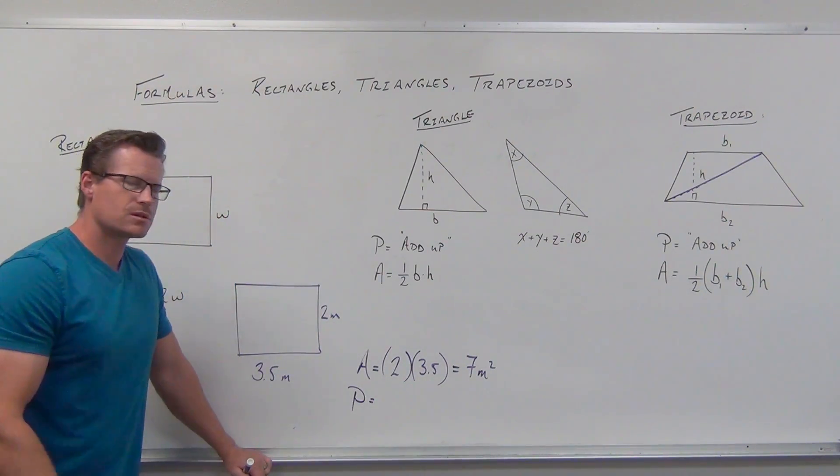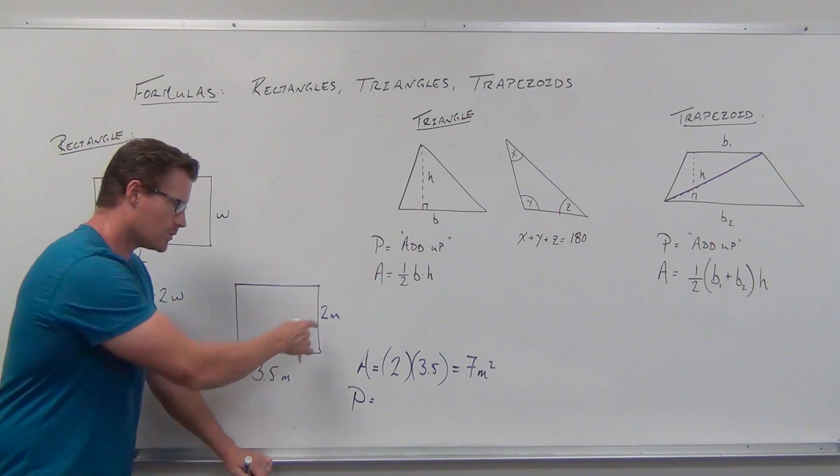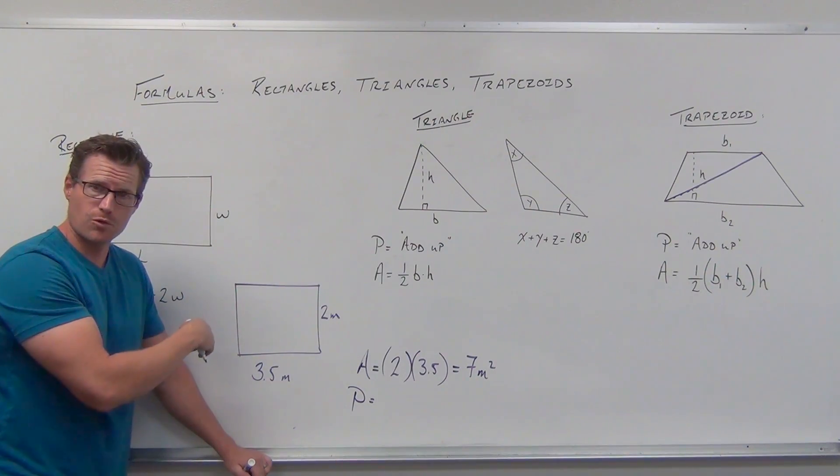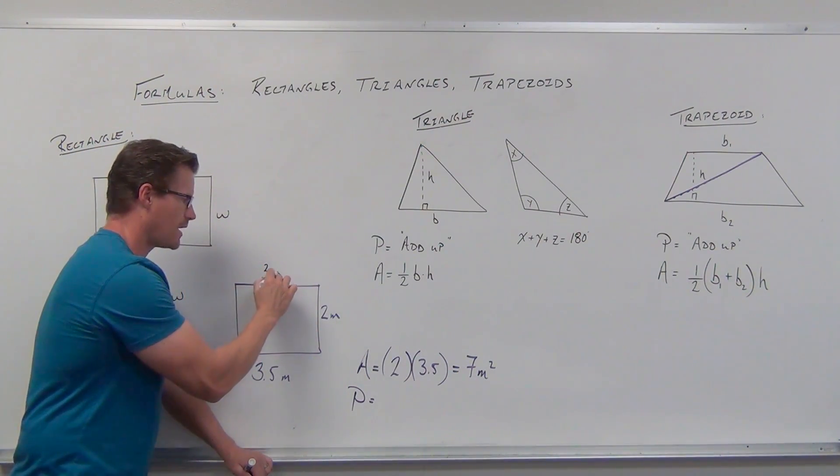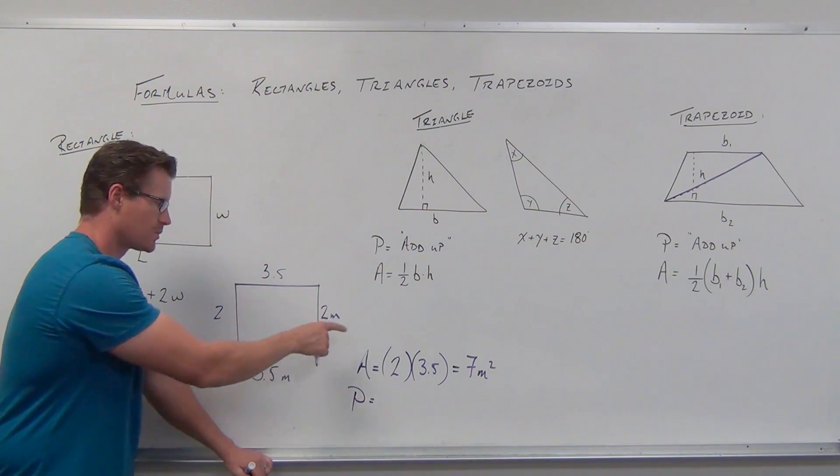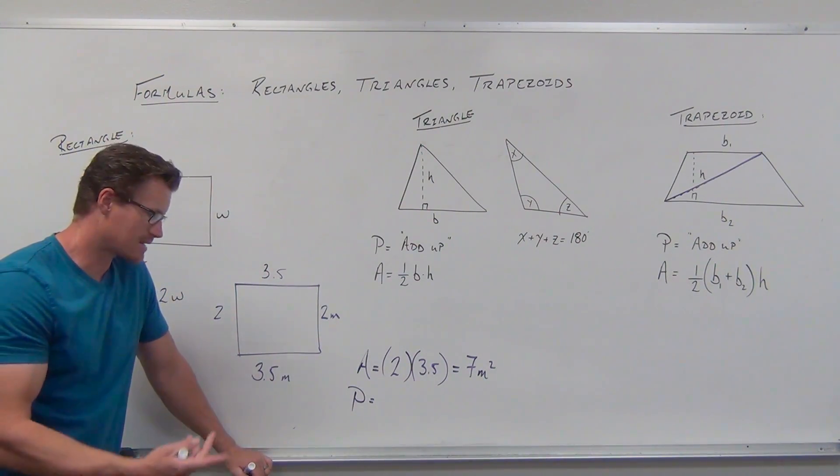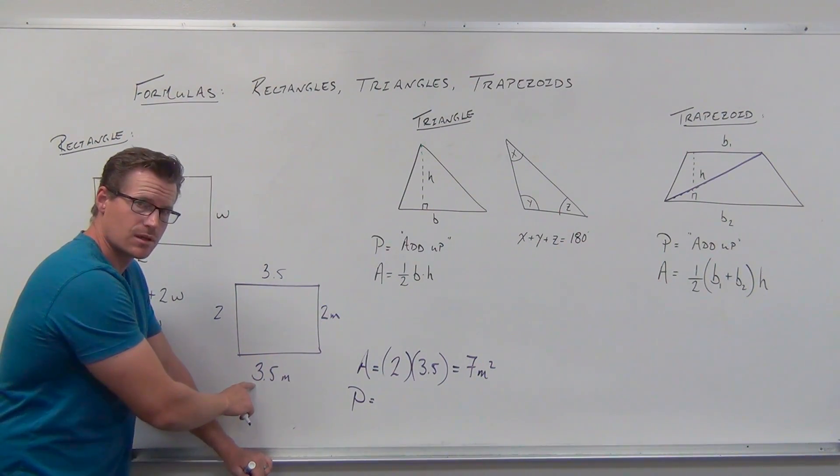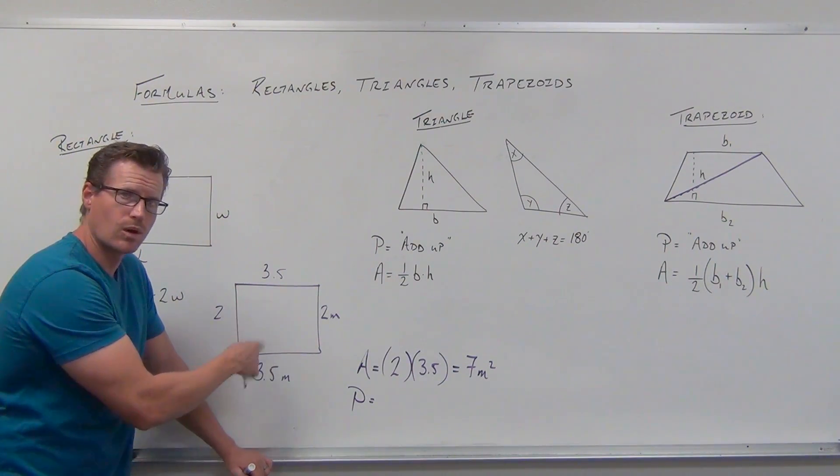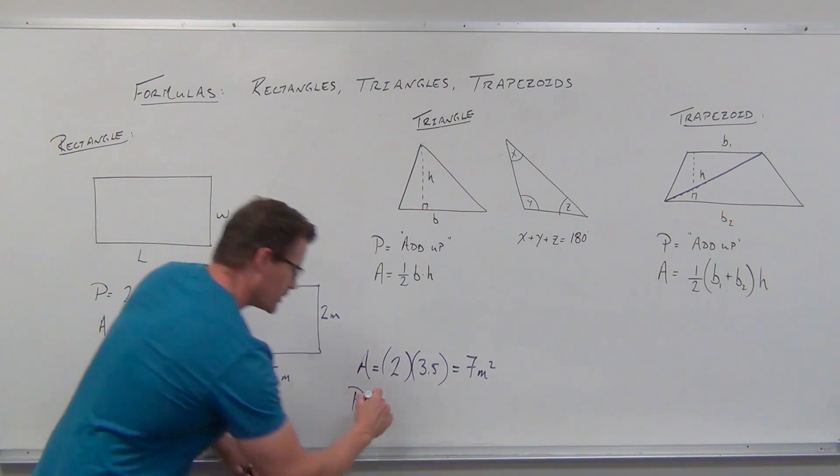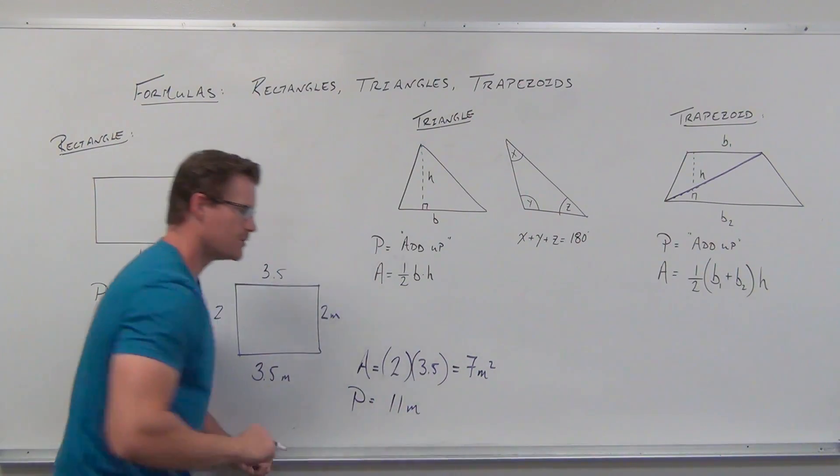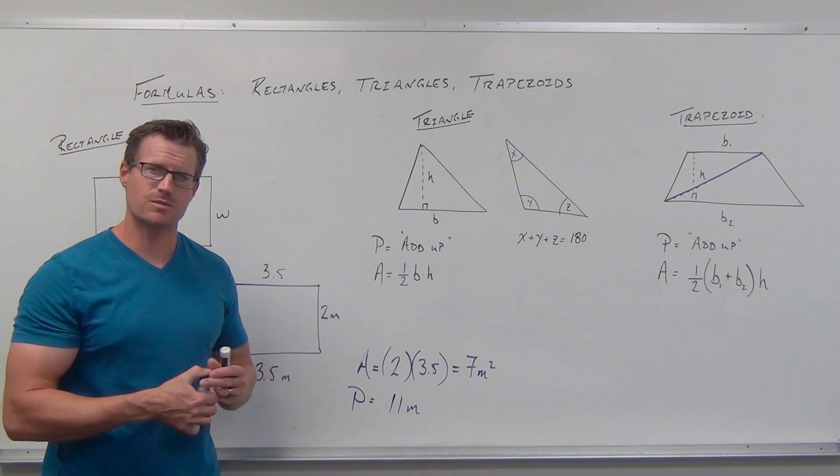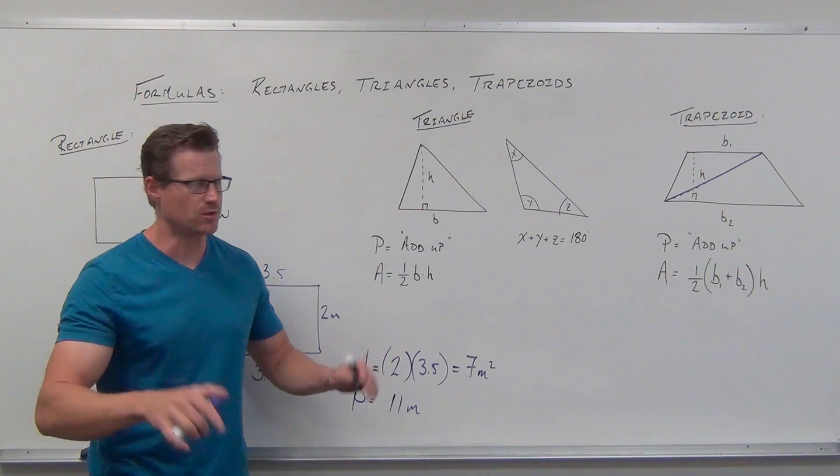For perimeter, don't just add 3.5 and 2 to get 5.5. Remember there's a hidden 2 and 3.5 on the opposite sides. You can add 3.5 + 2 + 3.5 + 2 = 11, or use the formula: 2(2) + 2(3.5) = 4 + 7 = 11. Either way, we get 11 meters - not square meters. Perimeter goes around the object, so it's linear units, not square units.